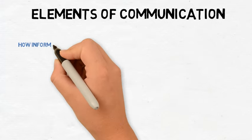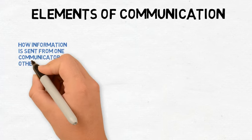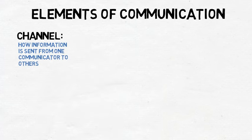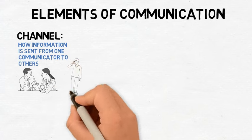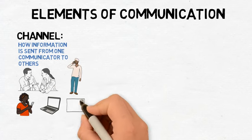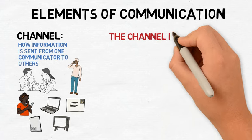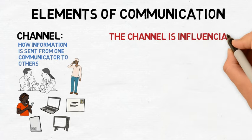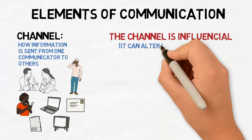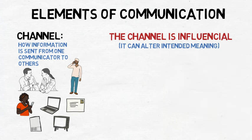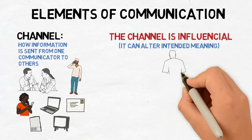A term used to describe how information is sent from one communicator to others is called a channel. Common channels include face-to-face conversation, talking on the phone, texting, emailing, a handwritten note, a newspaper article, and even a television advertisement, to name a few. Whatever carries a message from one communicator to another is labeled a channel. In some instances, the channel selected to carry a message is so influential that it can influence or completely alter the intended meaning of a message. Each channel brings with it additional meanings that can become part of a message sent.